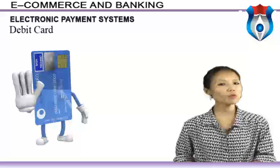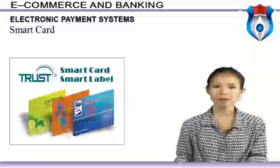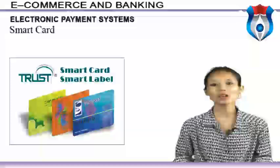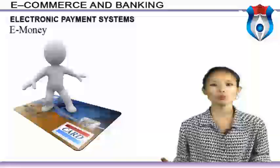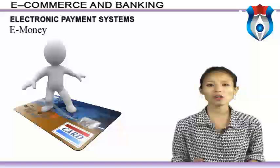A debit card is similar to a credit card — a small plastic card with a unique number mapped with a bank account number — but it requires having a bank account before getting the card. A smart card is similar in appearance to a credit or debit card but has a small microprocessor chip embedded in it, with capacity to store customer work-related or personal information. E-money transactions refer to situations where payment is done over the network and the amount is transferred from one financial body to another without any middleman — faster, convenient, and time-saving.